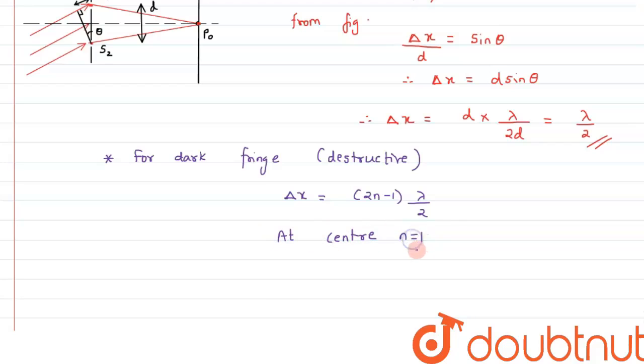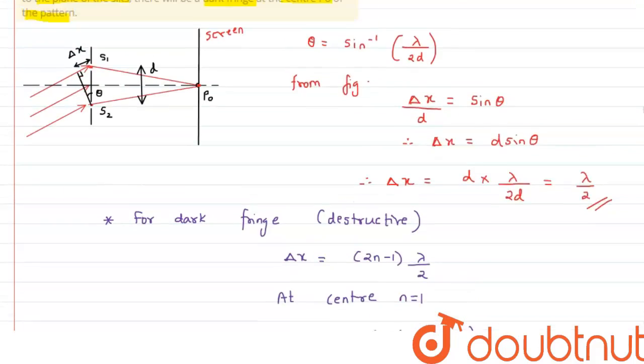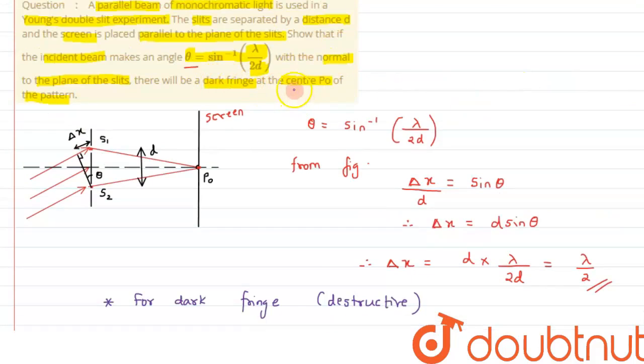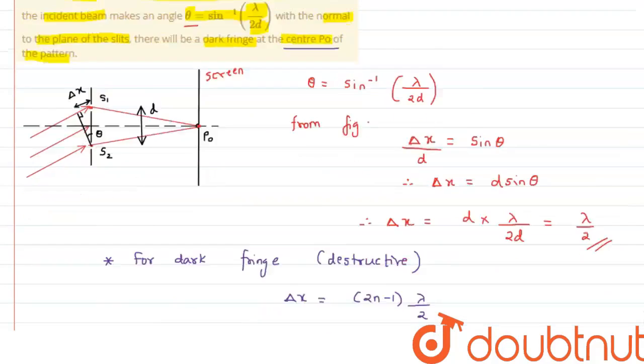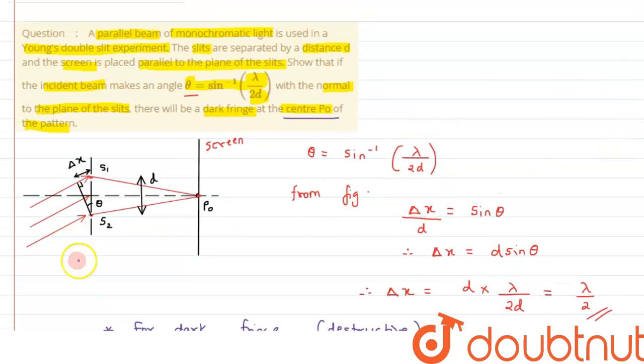The value of n will be equal to 1. Therefore we can say the value of path difference is coming out to be lambda by 2. For path difference of lambda by 2 we will get a dark fringe at the center. Similar result we have calculated above, that is we are getting path difference as lambda by 2, so the point which we will be getting at center P₀ will be a dark fringe. I hope you have understood the concept, thank you for watching.